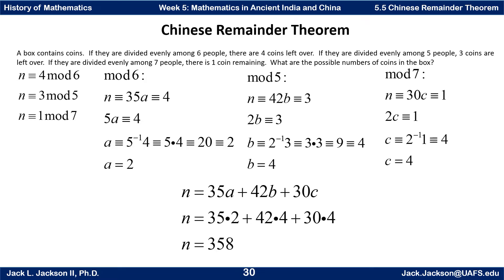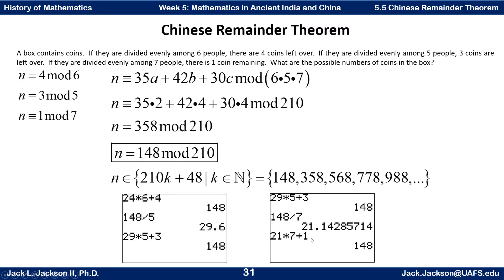So that is going to be an answer. It's actually not the smallest answer. So what we really have here is not just n equals 35A plus 42B plus 30C, but it's congruent to that modulo, what happens when you multiply the 6, the 5, and the 7, or the least common multiple of those three? That's 210. So modulo 210. In this case, there's a number less than this that's congruent there. So we can subtract 210 and get 148.